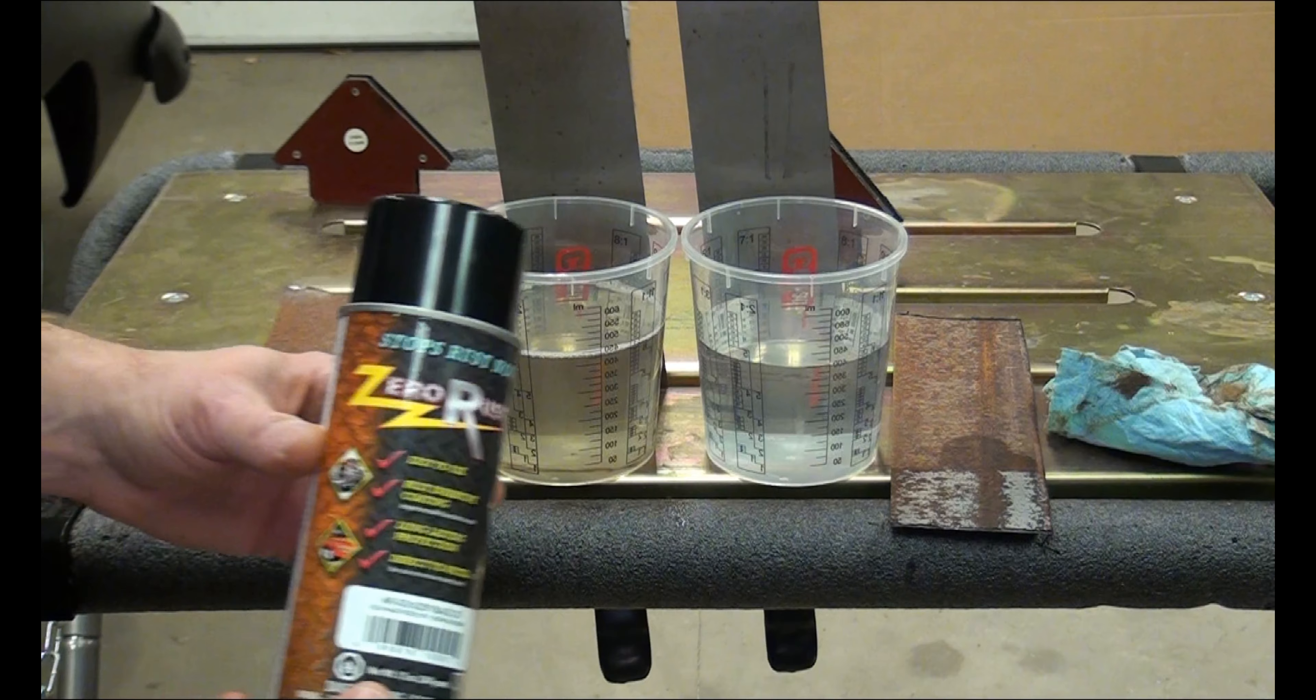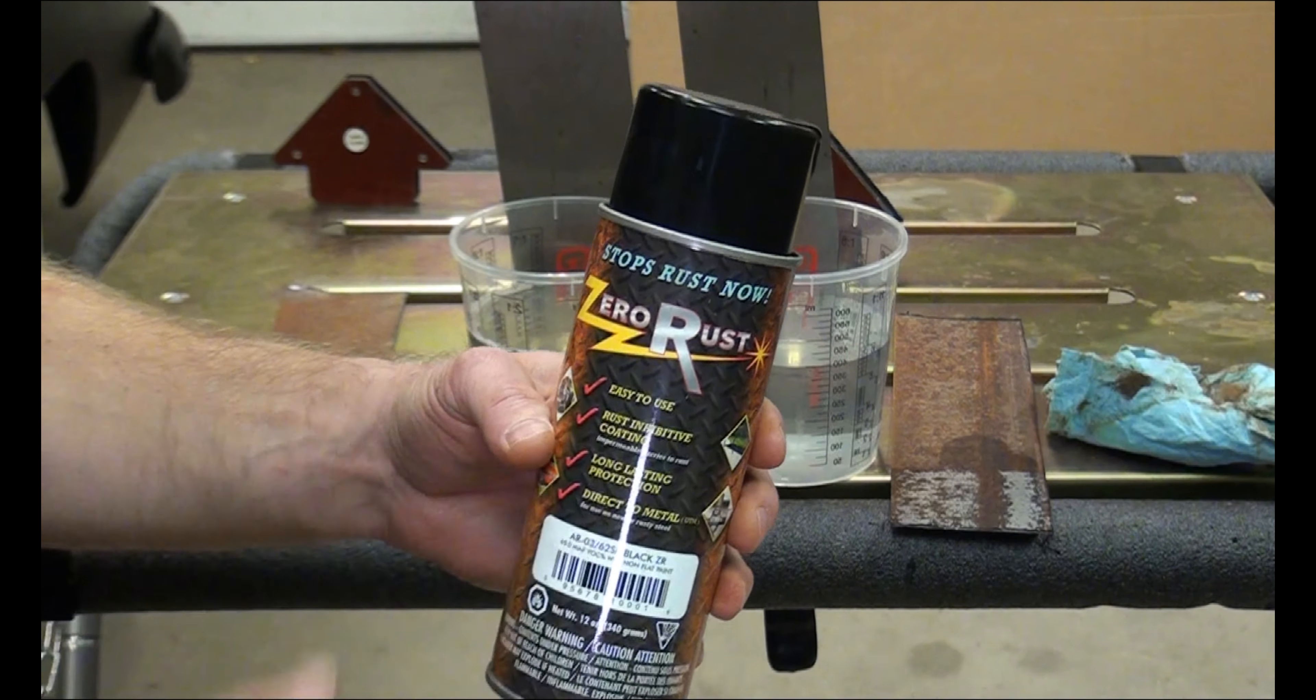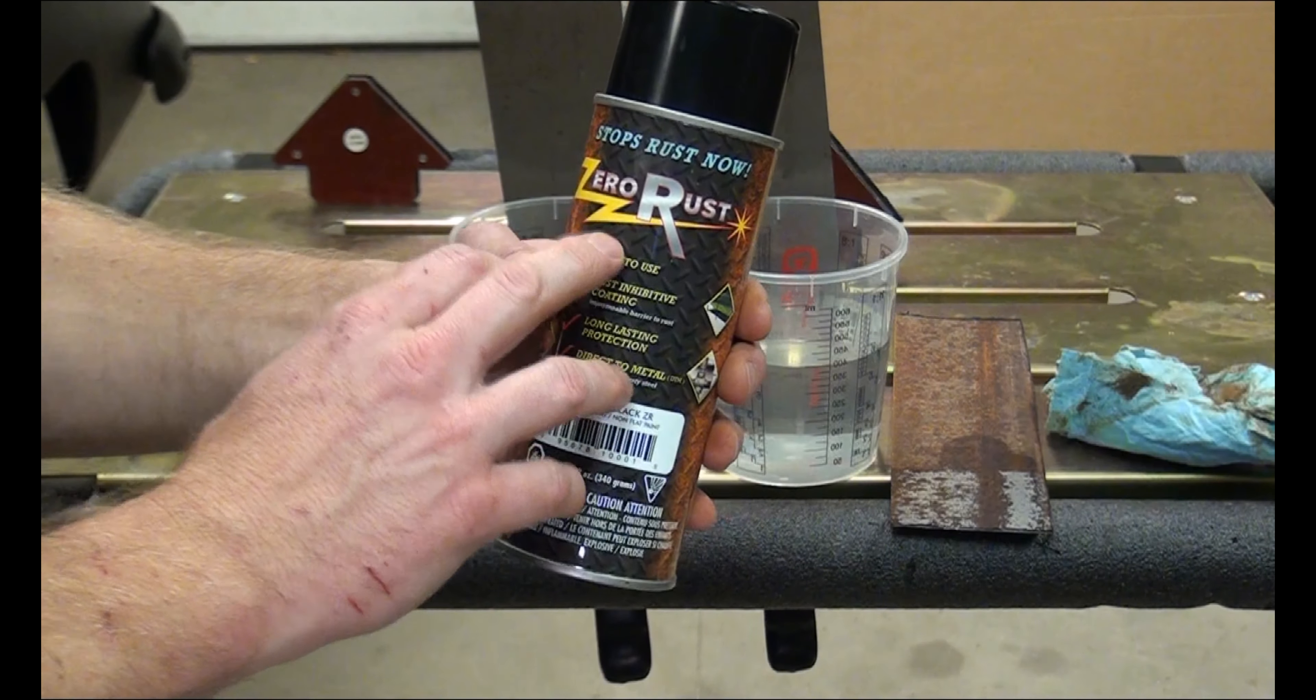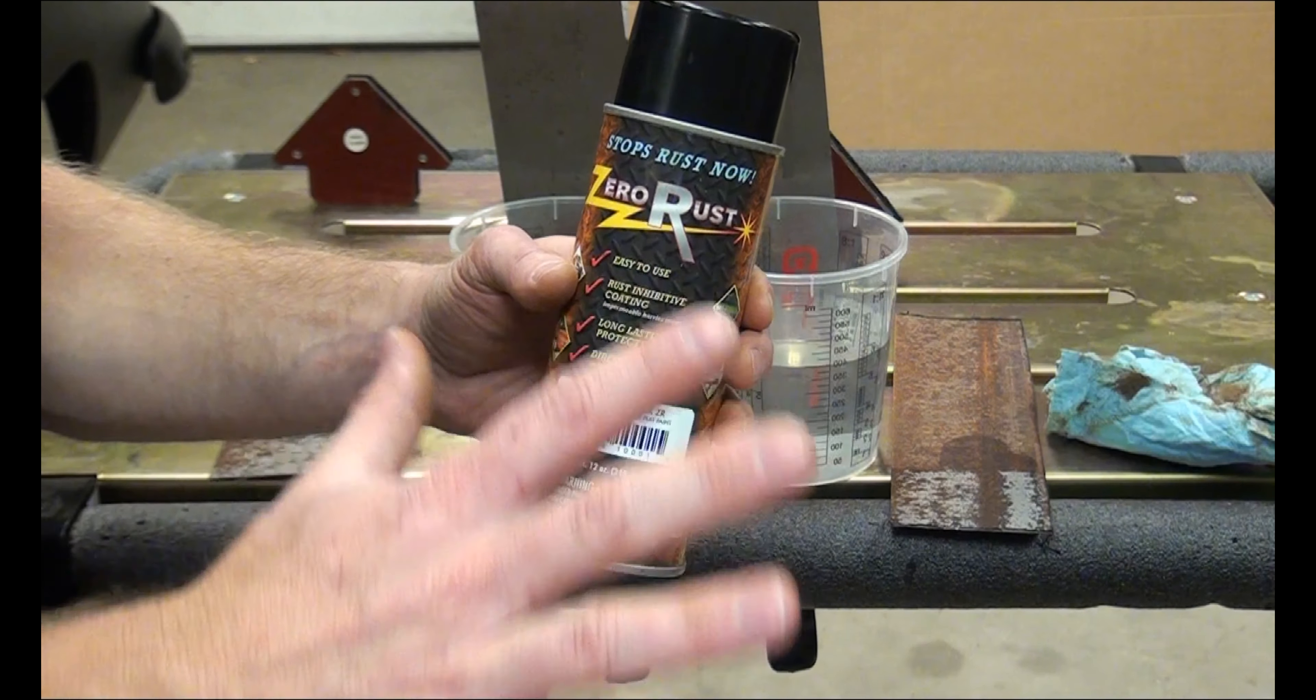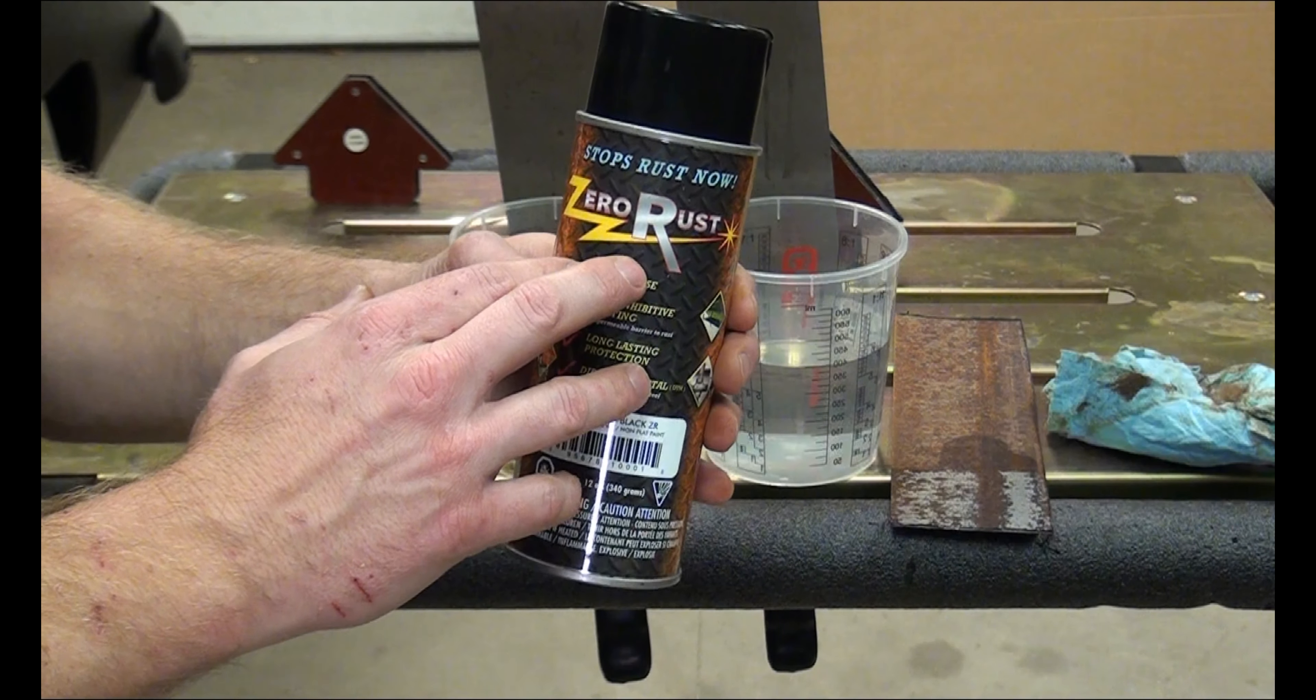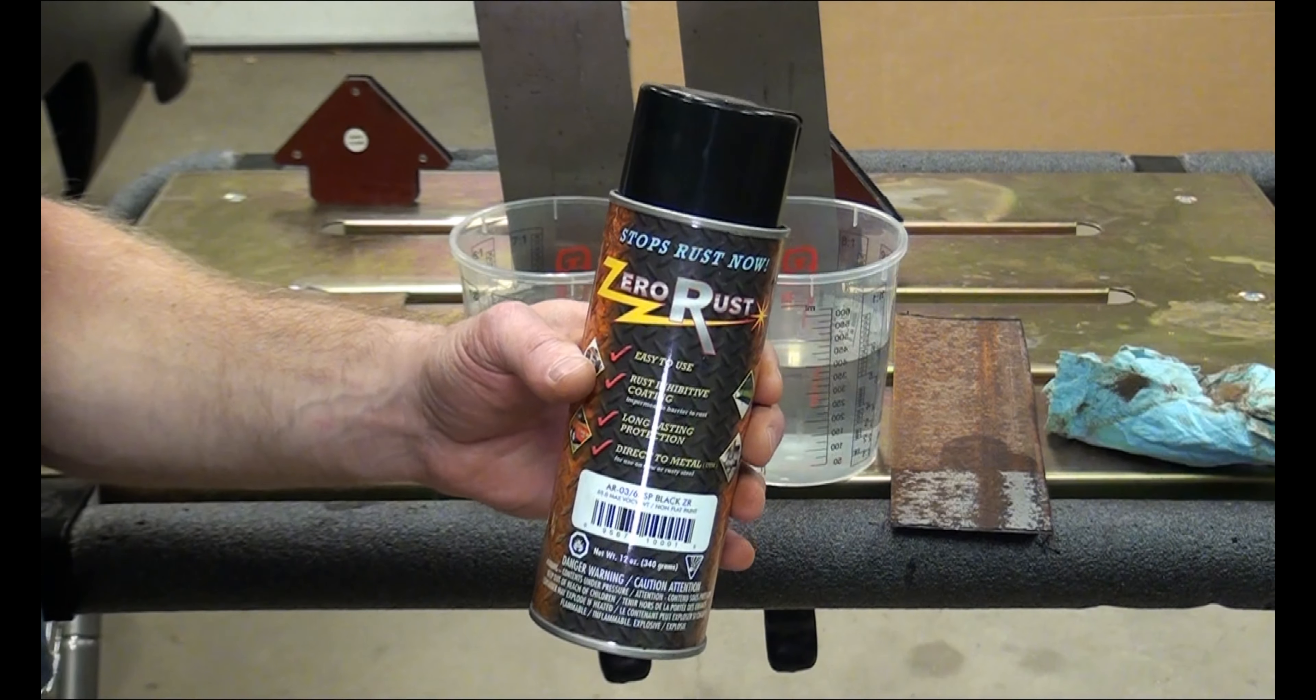Now, after you use any of these products, I would recommend putting something like Zero Rust on it. You've probably heard of POR-15. Zero Rust is a competing product—it's less expensive and actually does a better job, I think. It will help seal in any remaining rust or just seal the surface so that rust is sealed away from oxygen and won't spread any further. Putting something like this on top will seal everything up, and then you can either leave it like that or topcoat it.